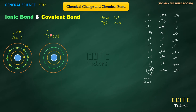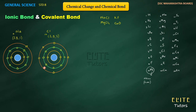For chlorine's electron structure: K-shell has 2 electrons, L-shell has 8 electrons, and the third shell has 7 electrons. So we draw 7 electrons in the third orbit — 1, 2, 3... 7 electrons total in the outermost shell.